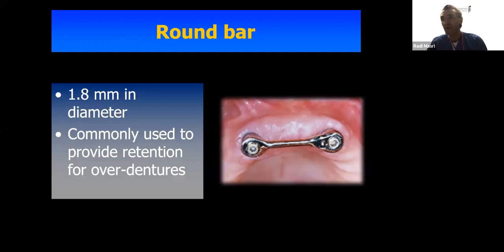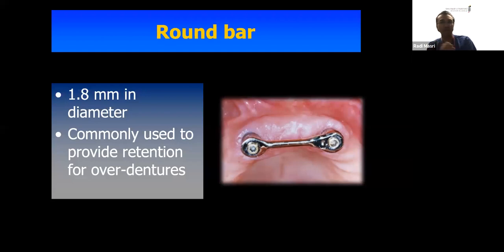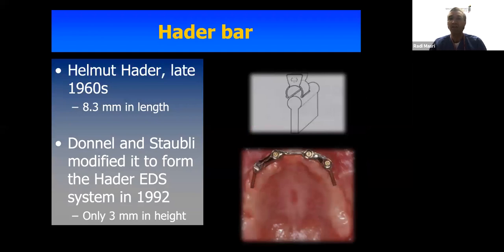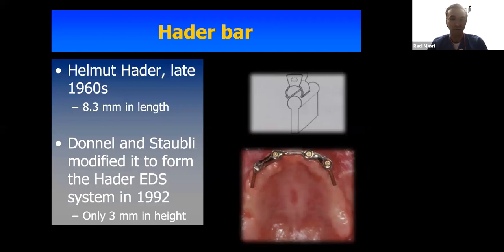The first and simplest bar is the round bar, typically 1.8 millimeters in diameter, commonly used to provide retention for overdentures. It is also the weakest bar because any load can result in bending and fracture. The 1.8 millimeter diameter is very important because it relates to the retentive clip placed on it — if it's not exactly 1.8 millimeters, the clip won't fit precisely and you won't have good retention.